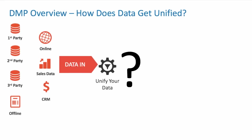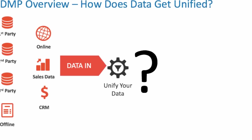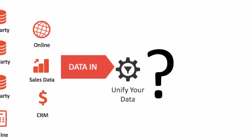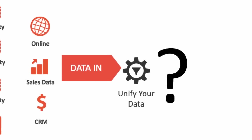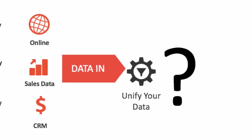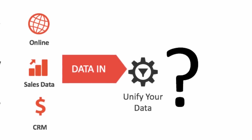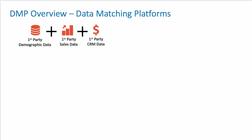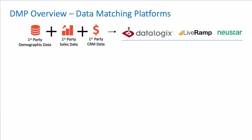If all this sounds a little automagical, well, in a way it is. So how does the unification of data actually work? This is where data matching platforms come into play. We take our first-party data and send it to one of these data matching platforms.